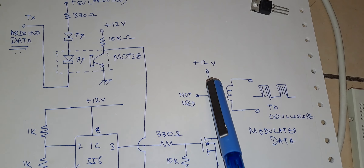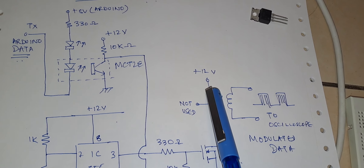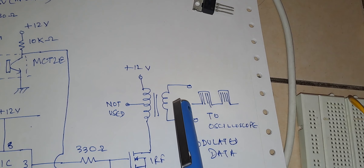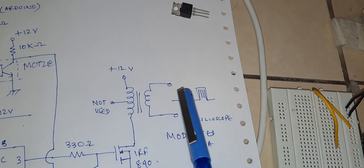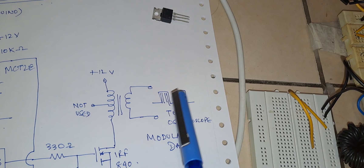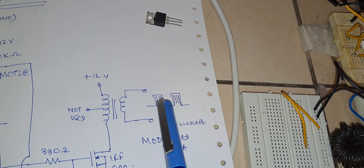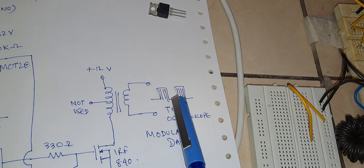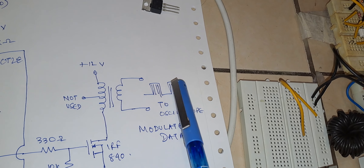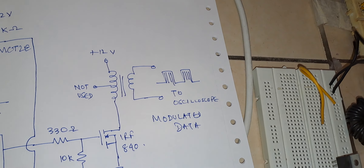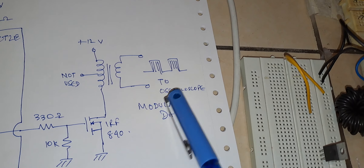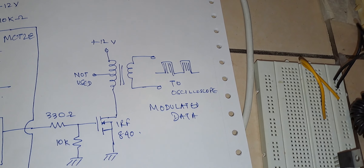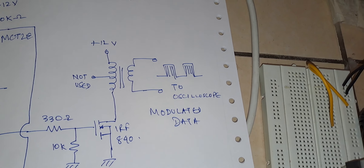The drain of the MOSFET is connected to the transformer, and the other end of the transformer is connected to the 12 volt bus. The secondary of this transformer is connected to the oscilloscope, and we can see the data signal with the carrier signal inside — the carrier signal is encapsulated in the data signal. This is how the waveform should look. Now let us see the multimeter readings and then the oscilloscope data.